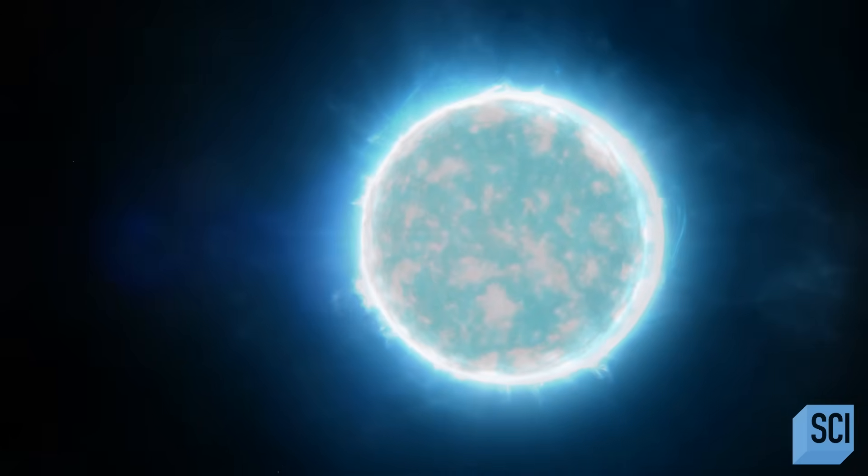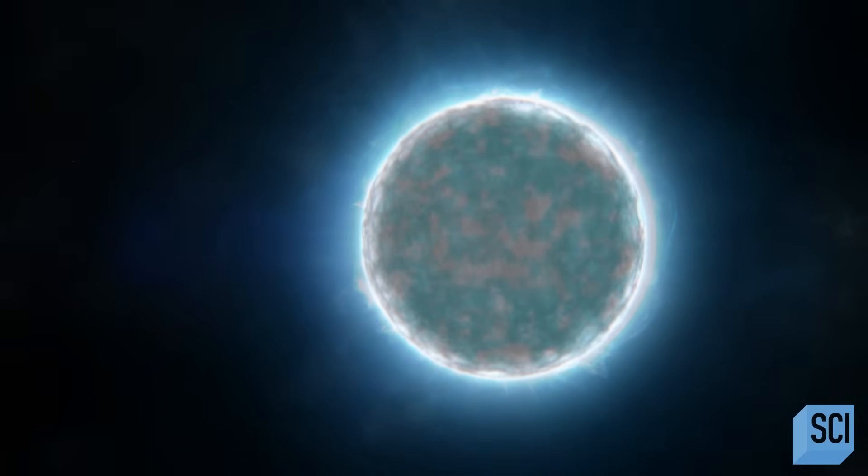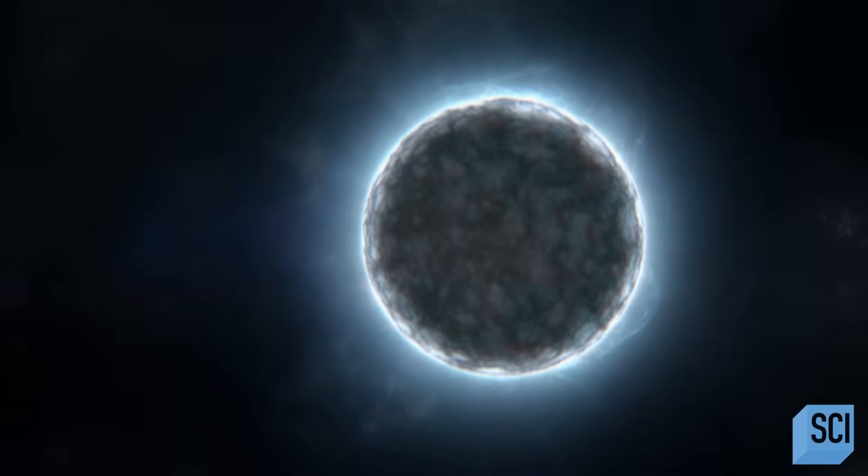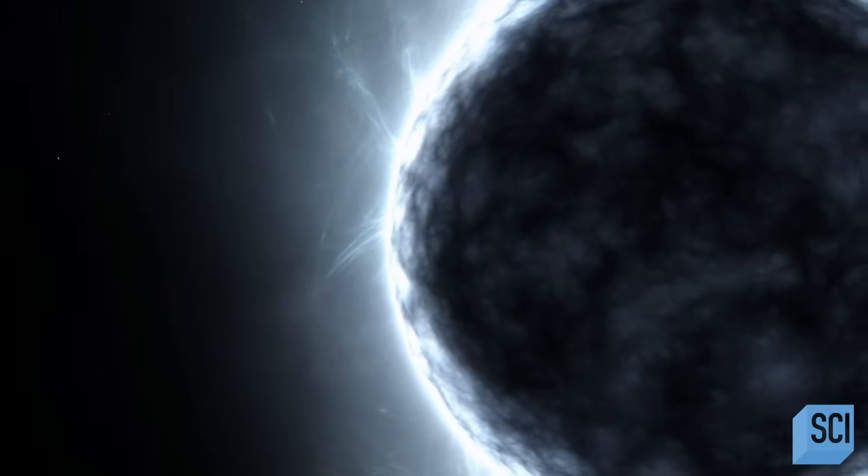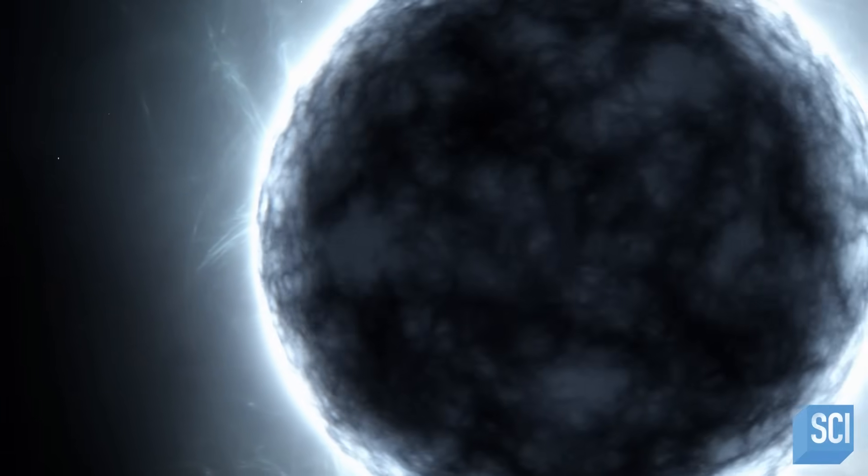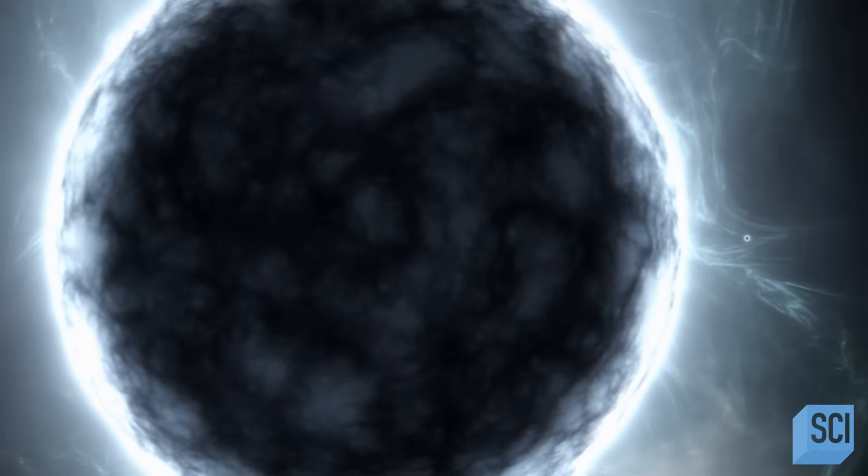White dwarfs gradually give off their remaining energy until there's just a cold, dead ball of matter. A black dwarf. We've never seen what we call a black dwarf. And there's a simple reason for that. It takes a tremendous amount of time, many tens of billions of years, longer than the age of the universe to reach that point.